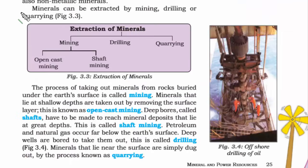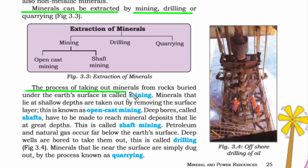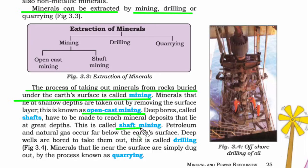Minerals need to be extracted and there are three ways of doing so: mining, drilling, or quarrying. Drilling into the earth's surface to take out rocks buried under the earth is called mining. There is also open cast mining, very famous in India, where dynamite is used to blow the earth's surface to remove the layer containing the mineral. Another type is shaft mining, where a deep bore is made at greater depth to reach the mineral deposits.